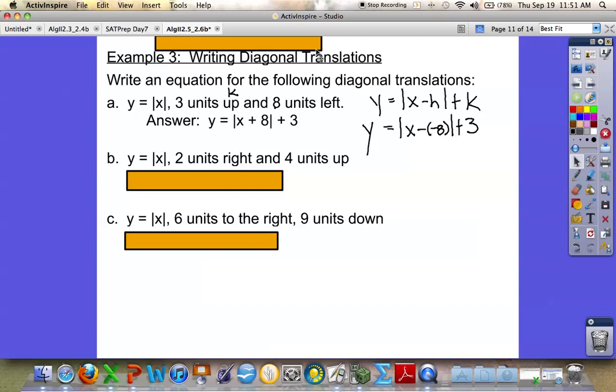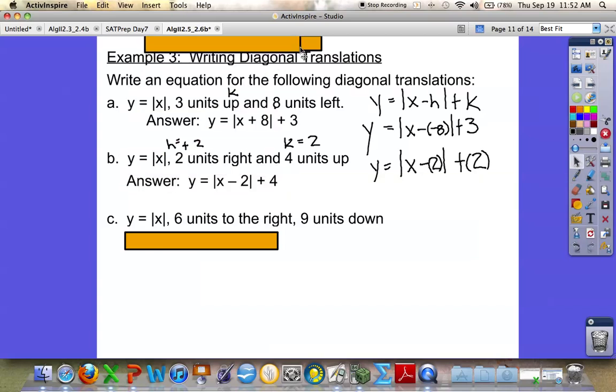2 units right. Well, right is a positive move. So our h is going to be plus 2. And 4 units up is a positive k move. So k is going to be positive 2. So if you plug in y equals x minus h plus k, we put in a positive 2 for h and a positive 2 for k. And you should get the equation x minus 2, plus 4. Change this last k to a 4.